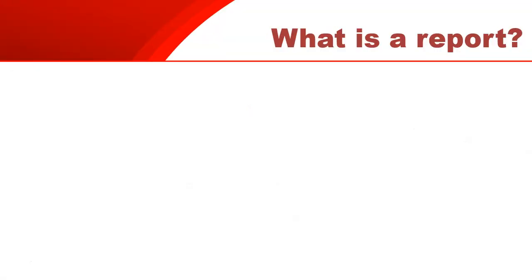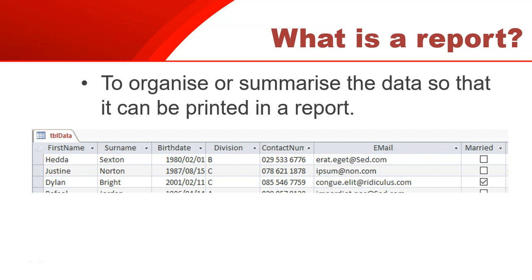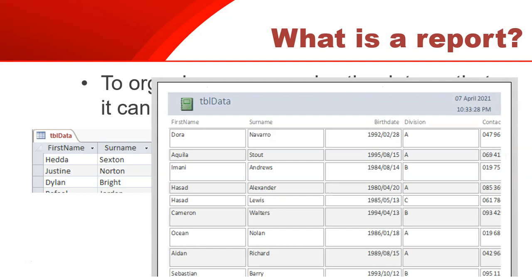What is a report? A report is a way to organize or summarize data so that it can be printed. If we had a table with a whole bunch of data and had to print it just like that, it would be very difficult to see specific data — it's quite complicated in table format. Maybe we want a nicer design, especially when presenting a printed document to someone else. We can base a report on a table or a query, and lay out the information in a much better format for printing.